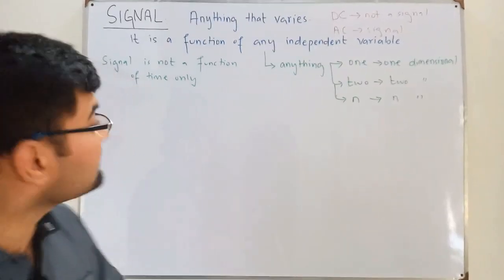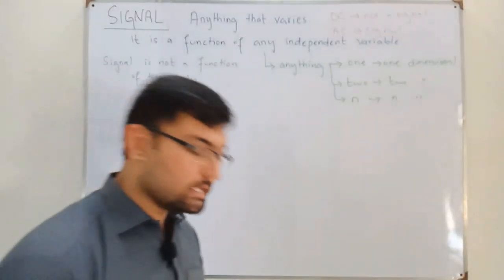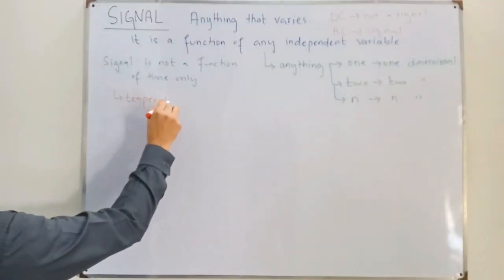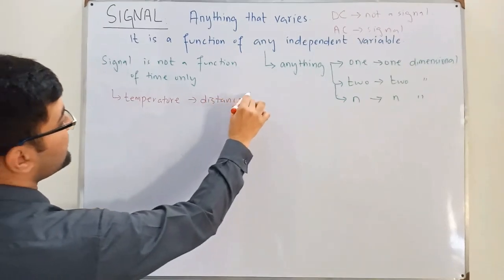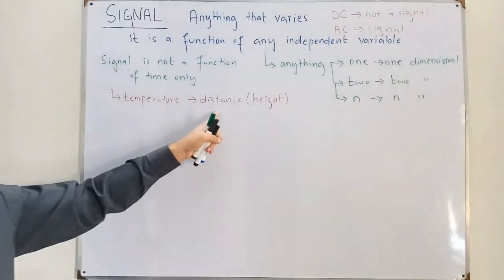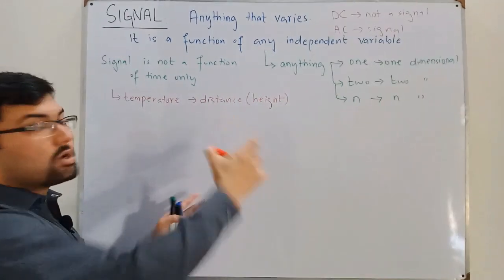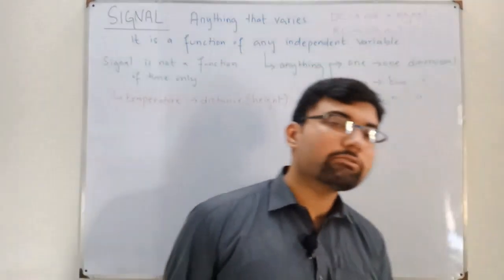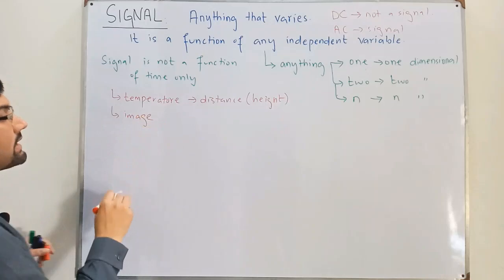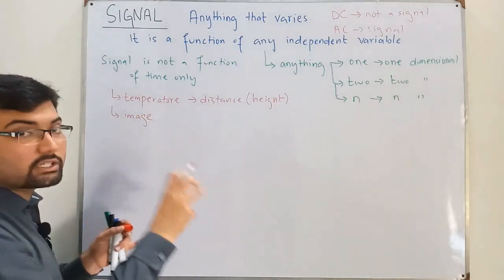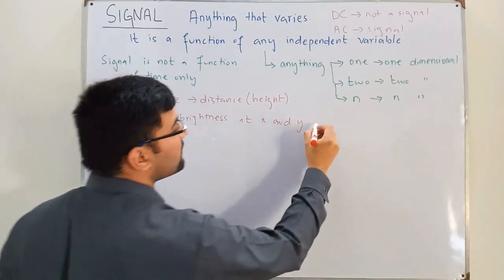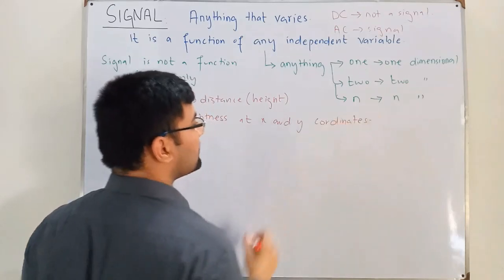For example, consider temperature — temperature depends on distance or height, not time. So we have a signal varying with respect to distance, and we also call this temperature a signal even though it is not varying with respect to time. Similarly, an image is a signal — a photo varies with respect to brightness at different x and y coordinates, so it is a function of spatial variables, not time, and it is still a signal.